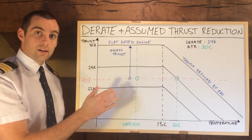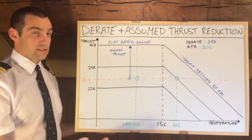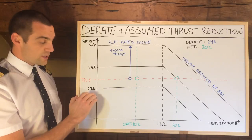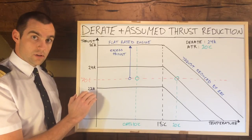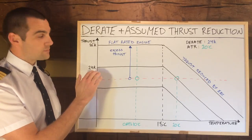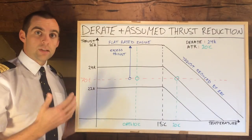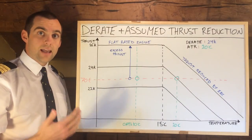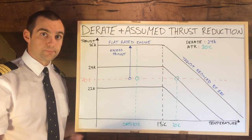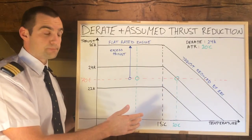Engines have various derate settings. For the aircraft I fly we can either select 22,000 pounds of thrust, 24,000 pounds of thrust, or 26,000 pounds of thrust. These are three engine power presets. So that's a quick explanation of what a flat rated engine is.